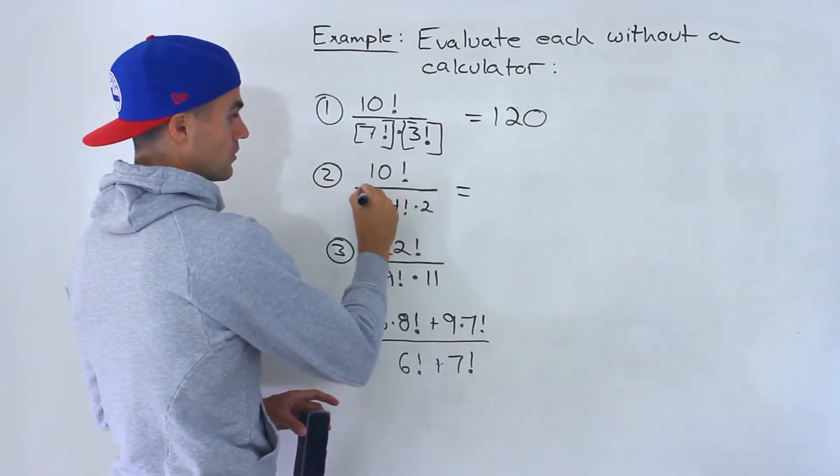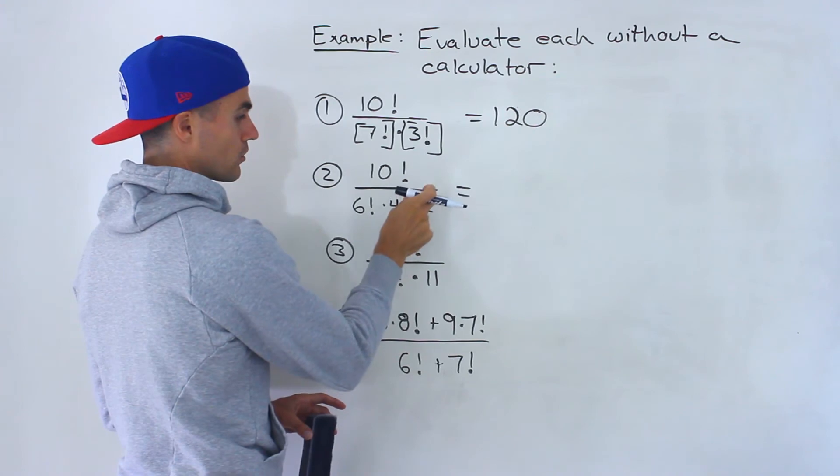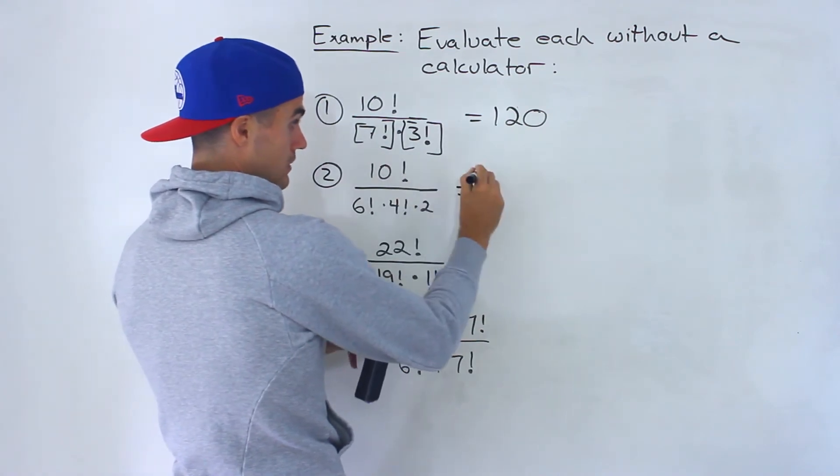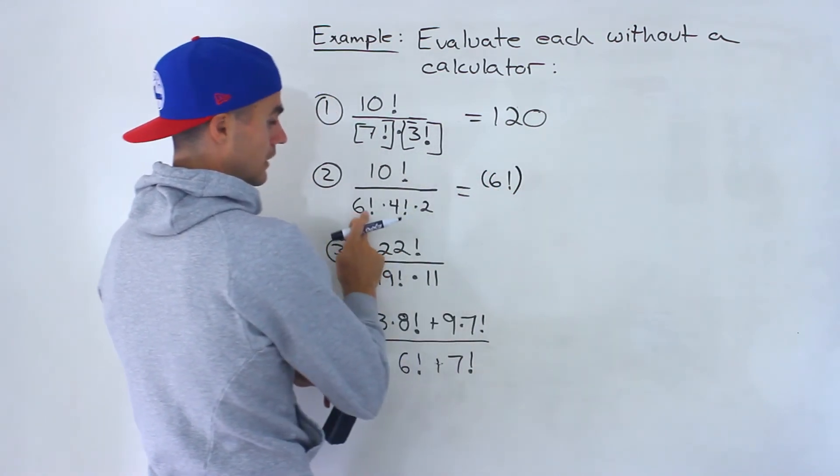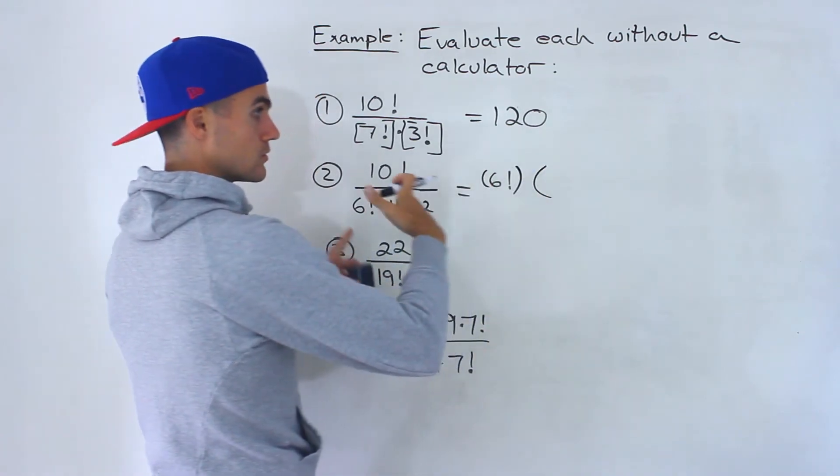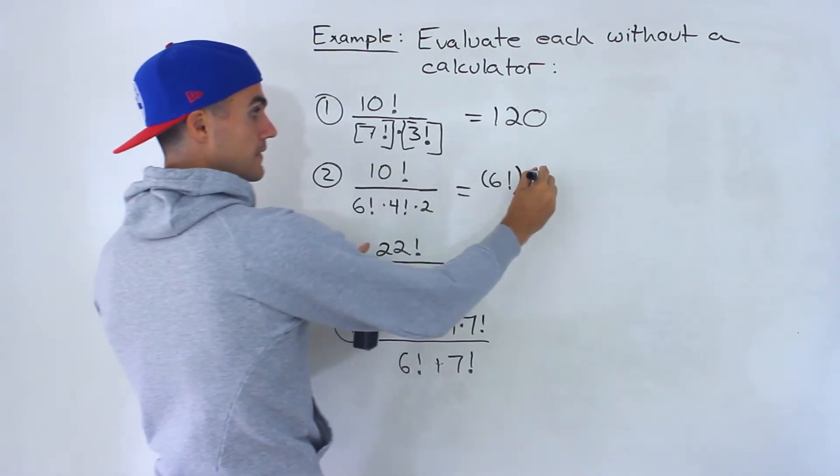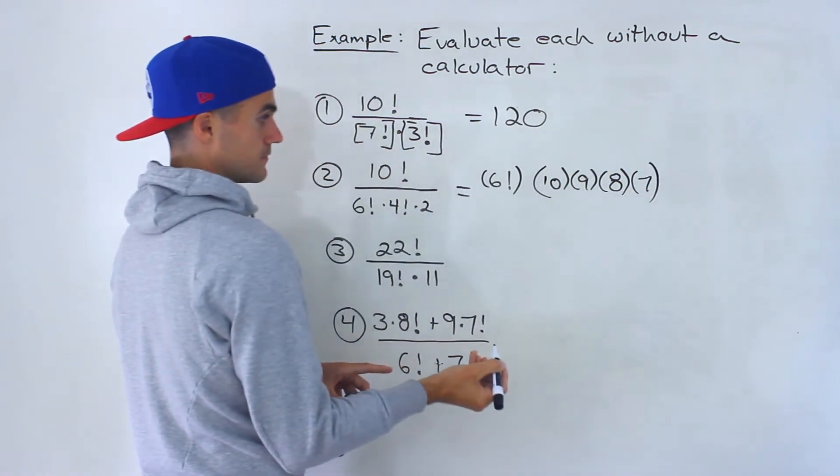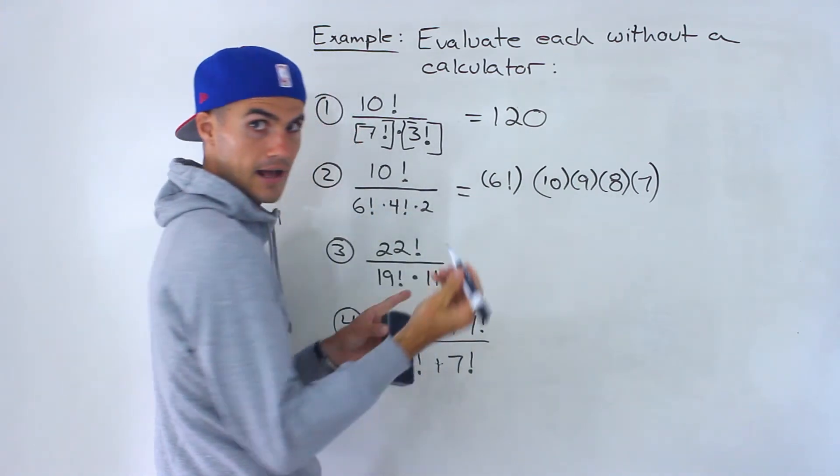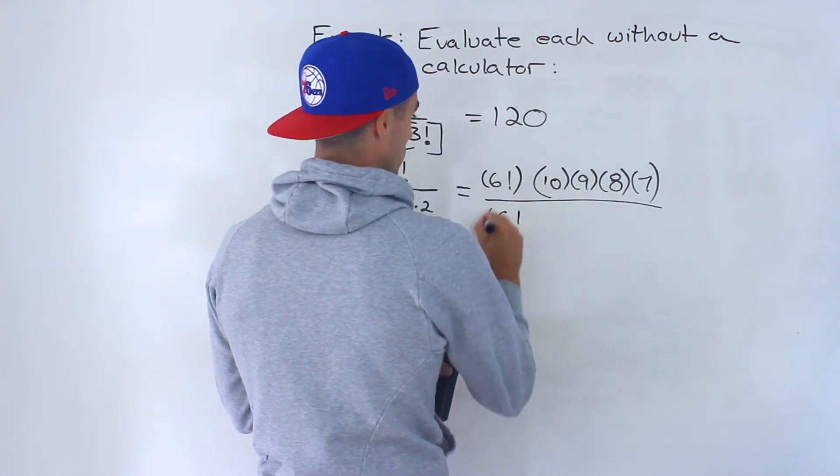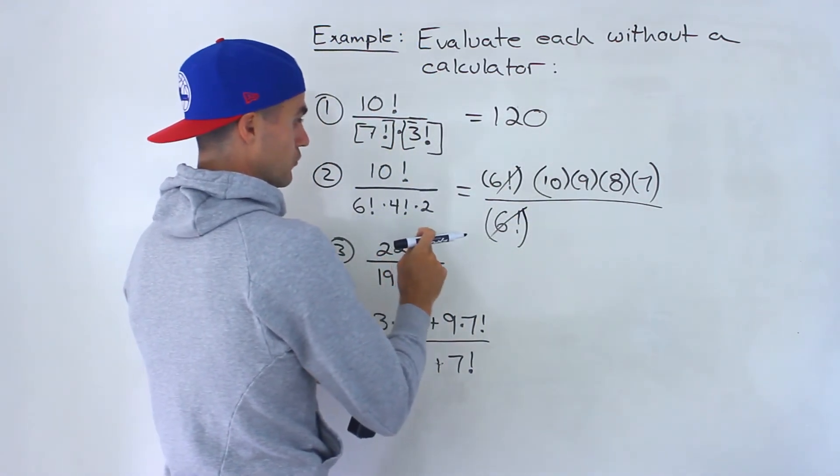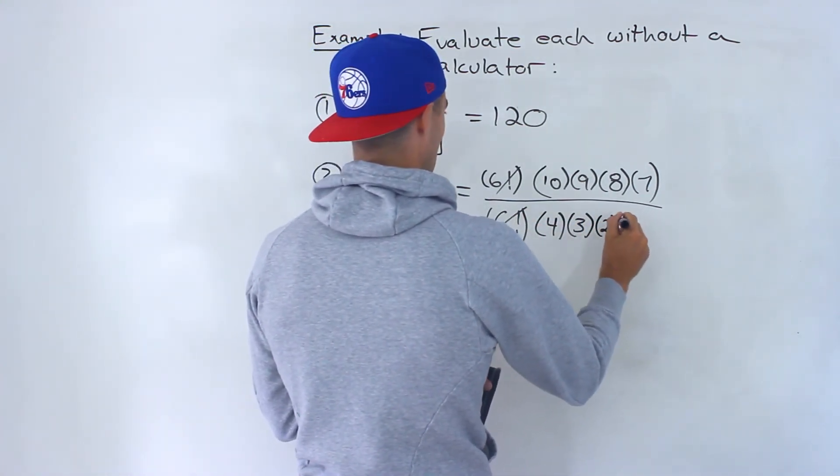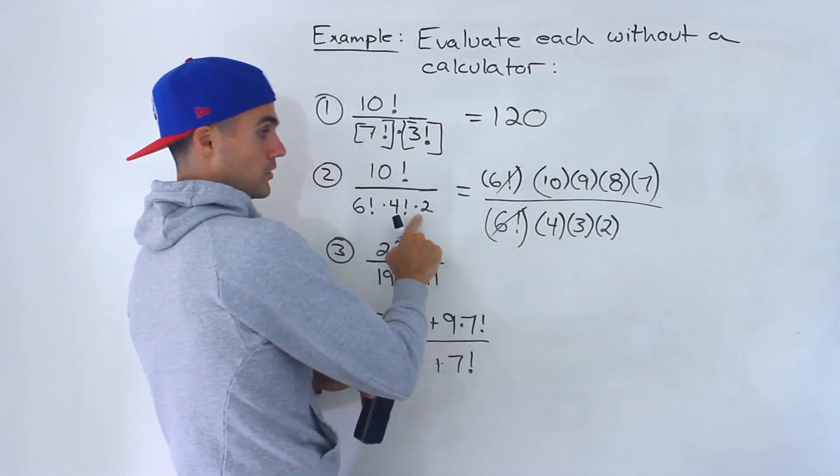Number 2, 10 factorial over 6 factorial times 4 factorial times 2. I'm going to do it that factoring way. I'm going to take out in the numerator that 6 factorial so we can cancel with this one. So 6 to 1 is taken care of. What's left? We had the 10, the 9, the 8, the 7. This is going to be all over 6 factorial. These cancel out. Then we'd be left with 4 factorial times 2. I'm just going to write out 4 factorial fully. We don't have to write the 1, but we have this multiplying 2.